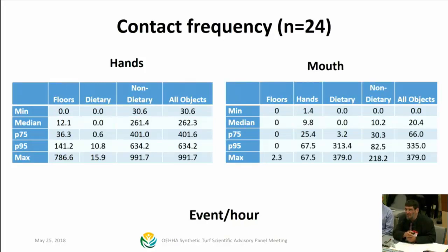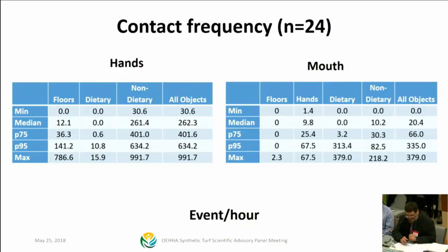Similarly, looking at mouth contact — up in the upper range, we're talking about hundreds of contacts with different objects. Most of this, in terms of the mouth, was dietary. But still, they're putting their hands in their mouth and putting other objects in their mouth. Fortunately, they weren't putting their mouth on the floor too often — one child was doing it. This pathway, both in terms of hand-to-mouth or object-to-mouth, is potentially important.